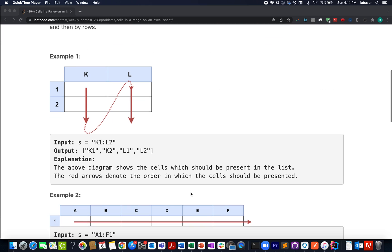In this question we are given a string with a particular format. The first character signifies the starting column value. The next character signifies the starting row value followed by a colon, followed by ending column value, followed by ending row value.